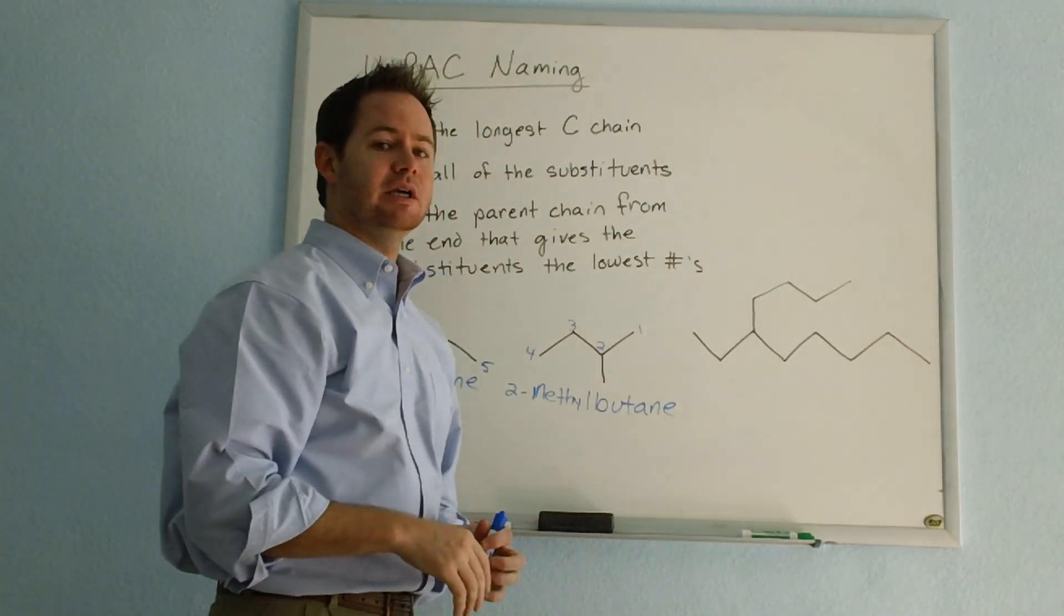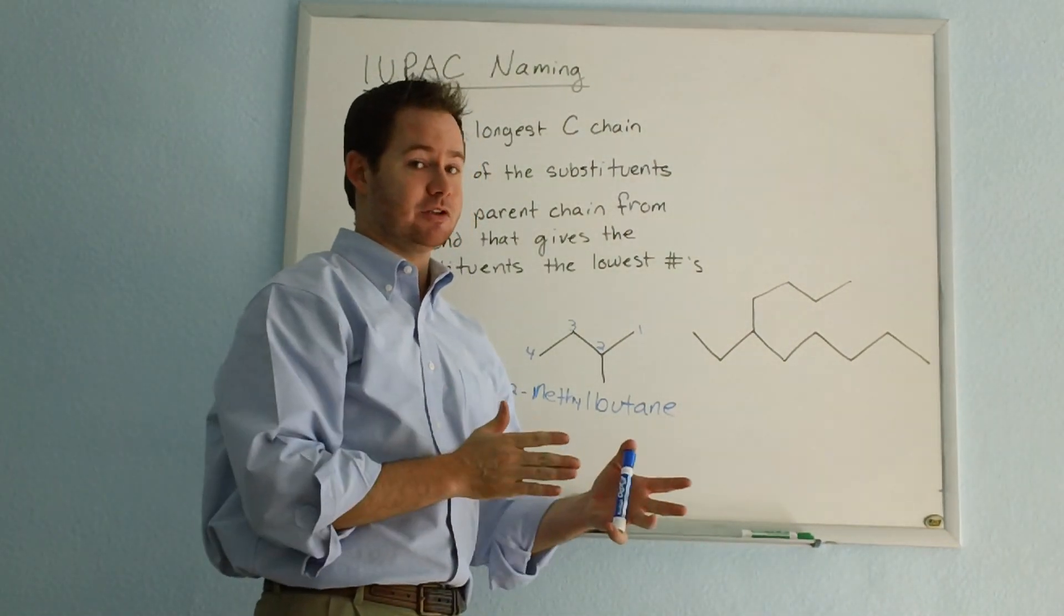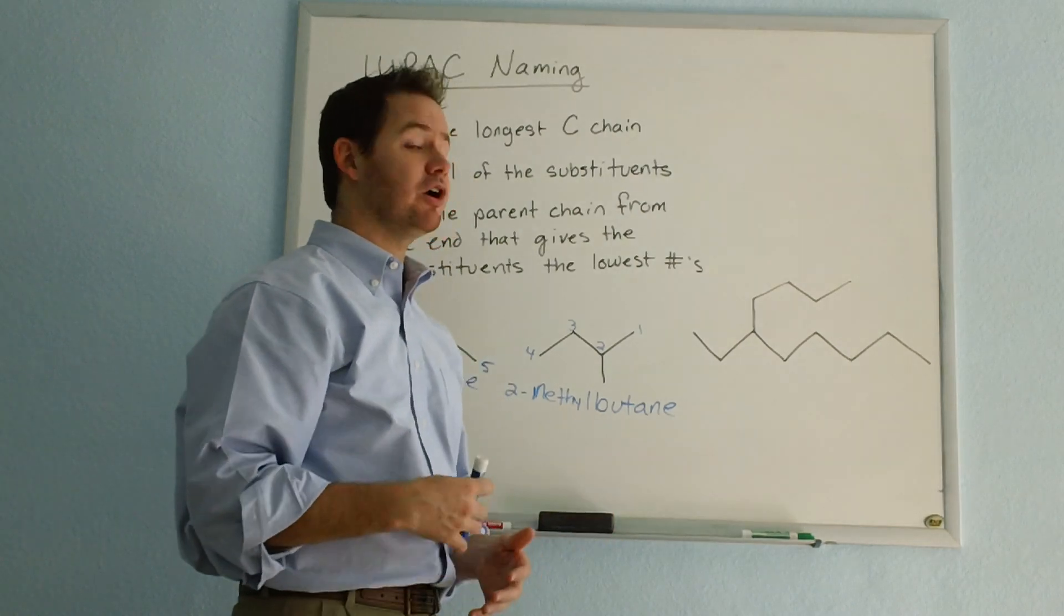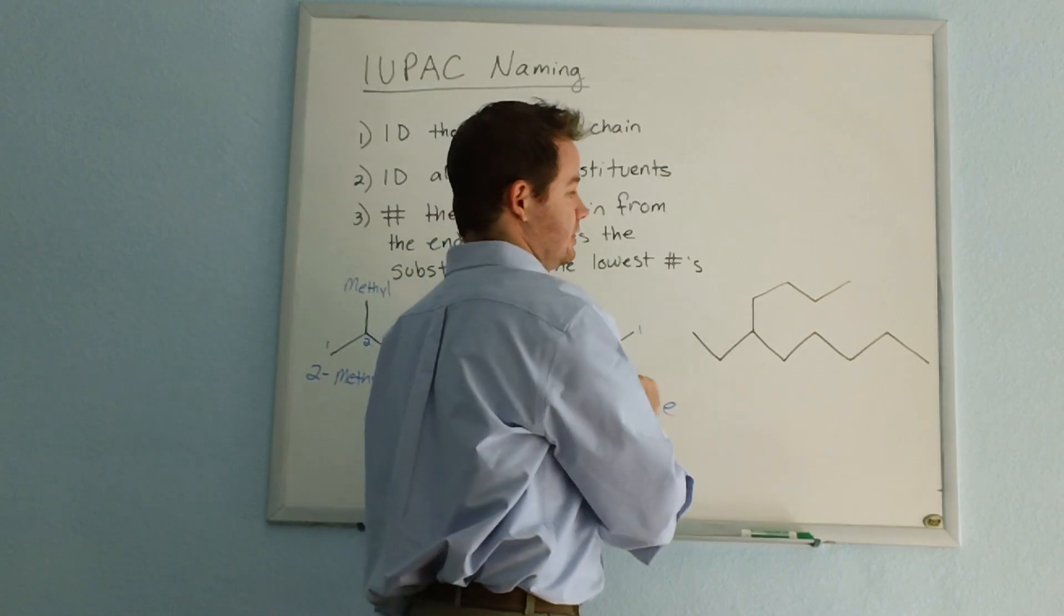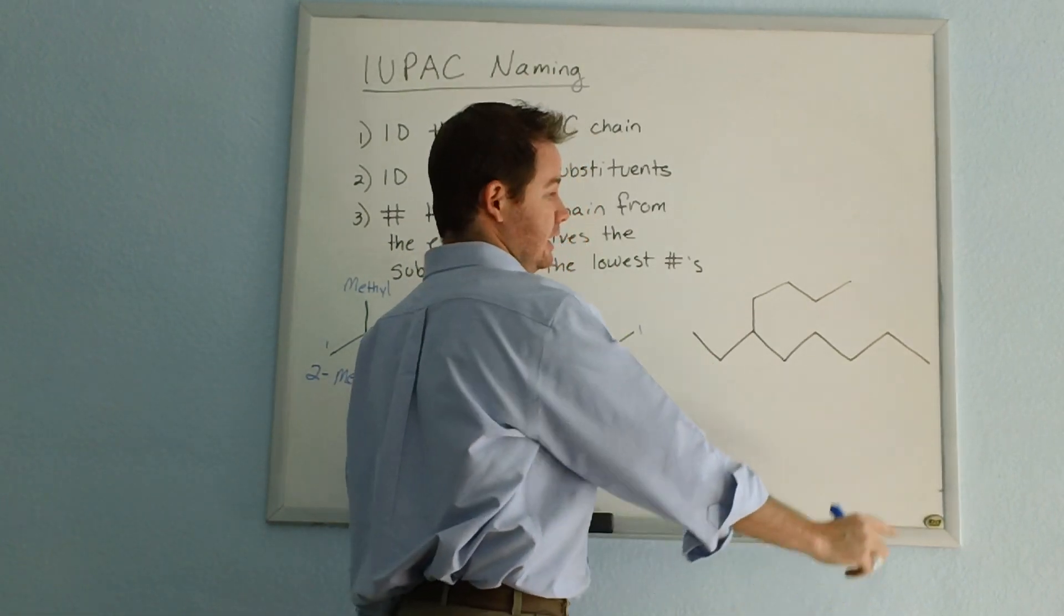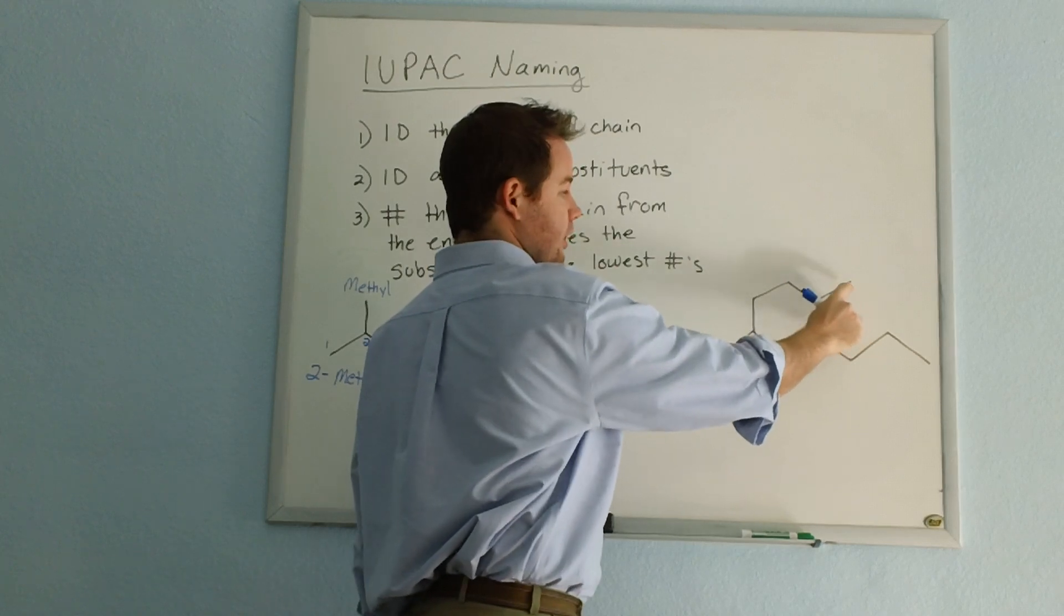But what we have to be careful about is the longest carbon chain doesn't always run exactly from left to right across the page. Your longest carbon chain can, as in this case, start from a different location. If we start from here and number it, we have one, two,